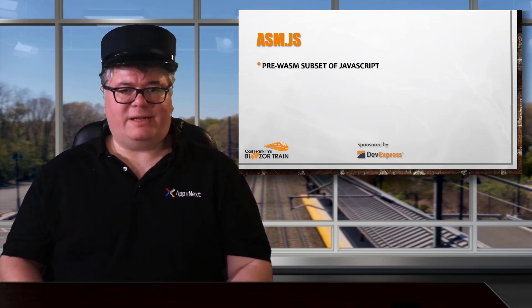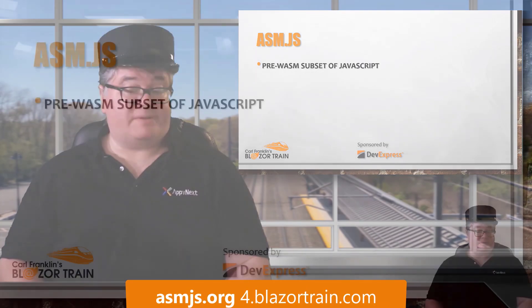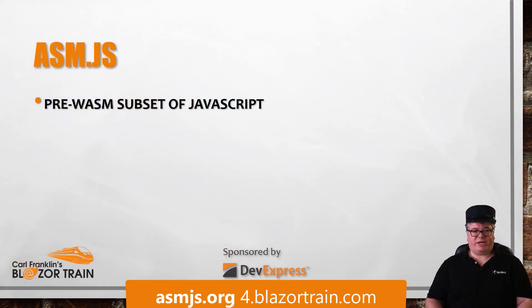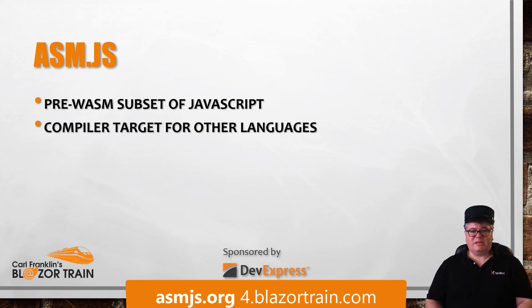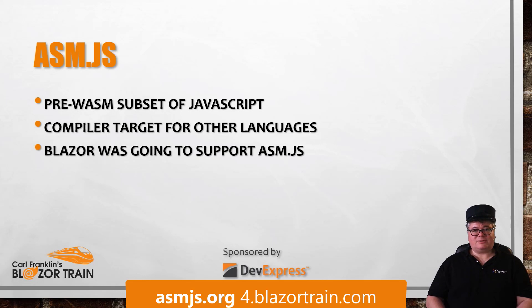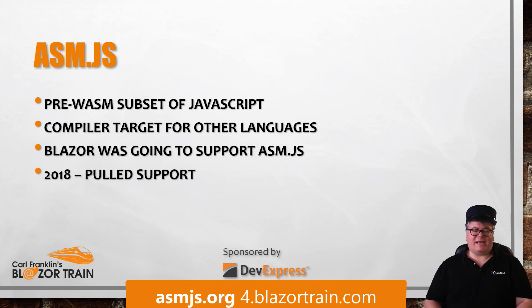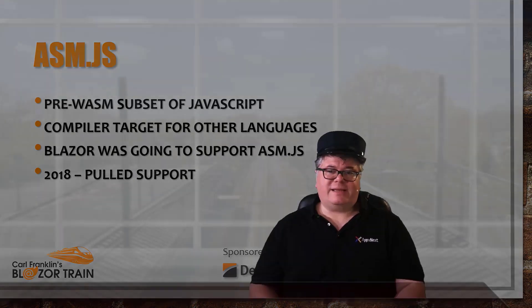Let's talk about Asm.js. Before Wasm became dominant in this space, there was a subset of JavaScript — and there still is — called Asm.js, that can act as a compiler target for languages other than JavaScript. Up until 2018, Microsoft had planned to use Asm.js as a fallback for browsers that didn't support WebAssembly in Blazor. Two things happened: first, Asm.js performance-wise just wasn't good enough for the Blazor team. Secondly, more browsers were supporting Wasm than Asm.js, so Microsoft removed support for Asm.js.